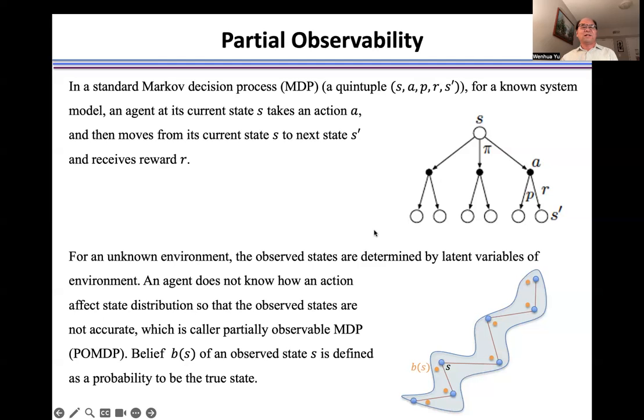However, if the environment or system model is unknown, the observed states are determined by latent variables of the environment. The state we observe may differ from the true state. To describe this observed state, we define belief. Belief B means a probability of the observed state to be the true state. This case is a partially observable Markov decision process.